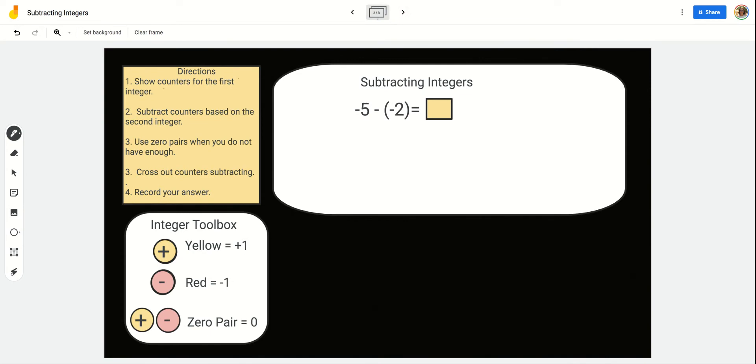This time, we're going to have negative 5 take away negative 2. Well, let's see. We're going to start with negative 5. So we're going to drag over 5 red integer counters. 1, 2, 3, 4, 5.